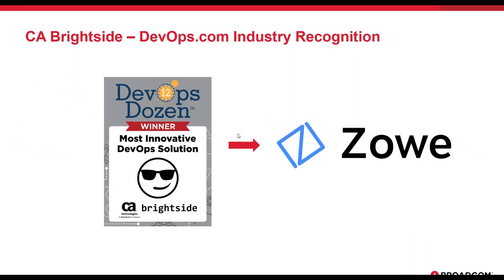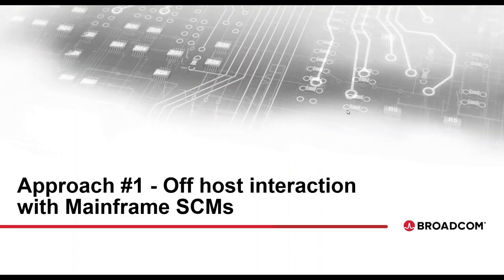Zoe is actually an open source project partnered through Rocket, IBM, and Broadcom. It essentially modernizes the way you access the mainframe. It was voted the most innovative DevOps solution for the mainframe in 2018 — impressive because that included not just mainframe but all DevOps tools including distributed, mobile, and cloud.